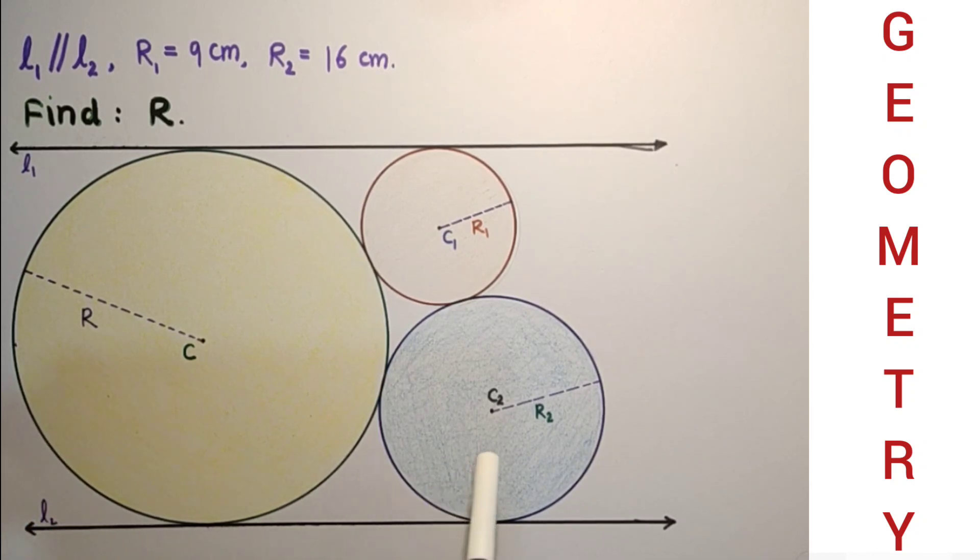These two lines are tangent. And this circle, these two circles are touching each other. Centers of these circles are C, C1, C2 and respectively are R1 and R2 are radii of these circles.